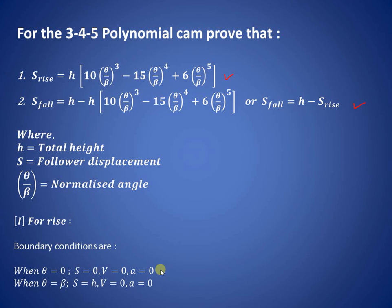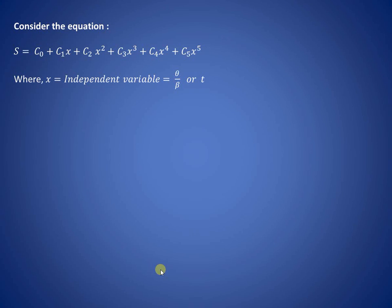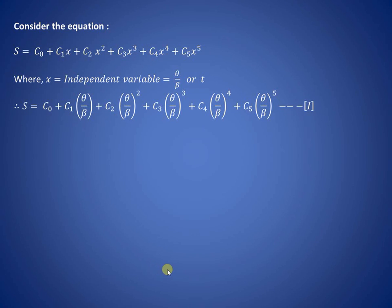Let us consider the general polynomial equation: s equals c0 plus c1·x plus c2·x² plus c3·x³ plus c4·x⁴ plus c5·x⁵. We assume the independent variable x equals theta/beta. Substituting, we get s in terms of (theta/beta), (theta/beta)², (theta/beta)³, (theta/beta)⁴, and (theta/beta)⁵.